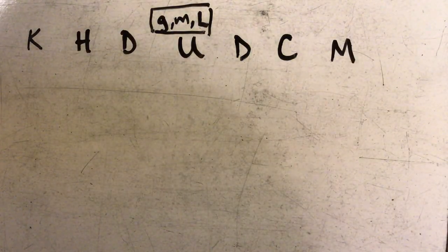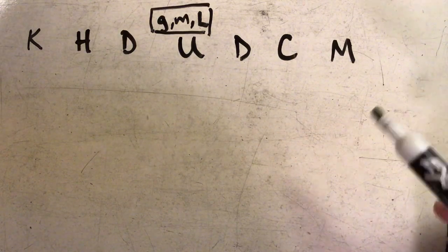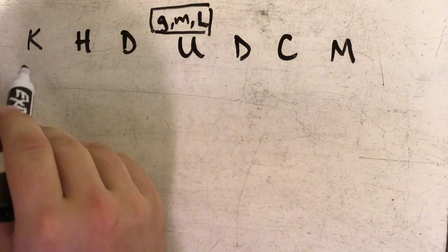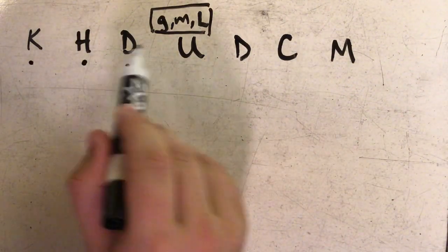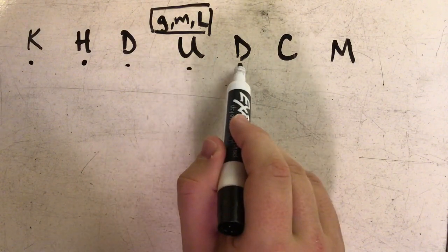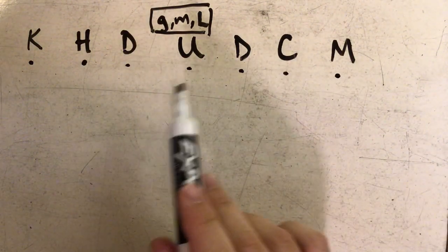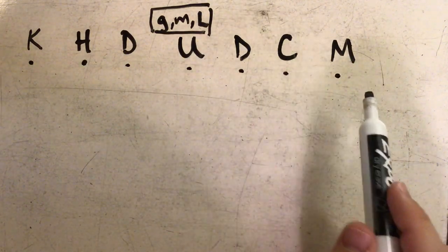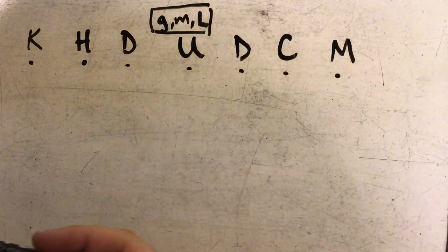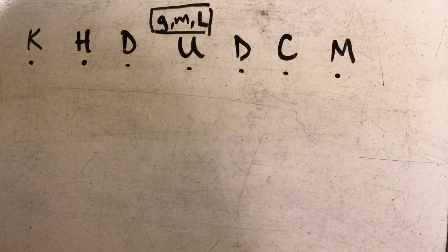There's a few acronyms that might help you remember the order of these. The one that I like to use is King Henry Died Unexpectedly Drinking Chocolate Milk. If you can remember that phrase, then you can remember all of the metric units in order.